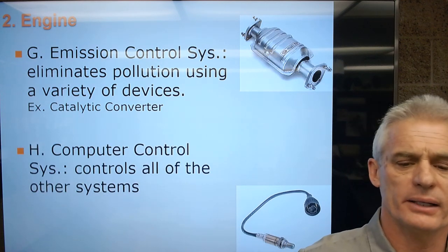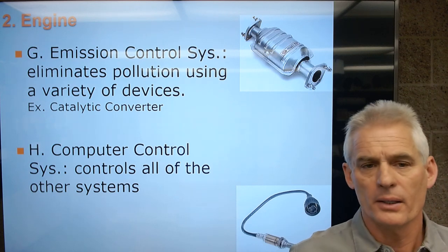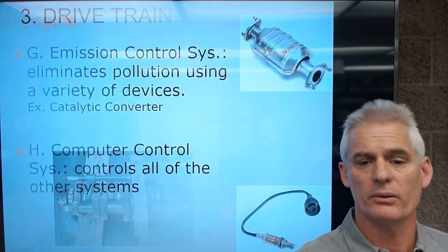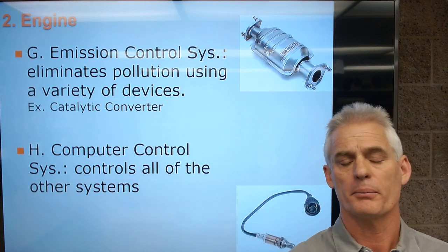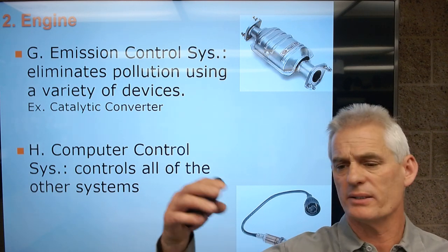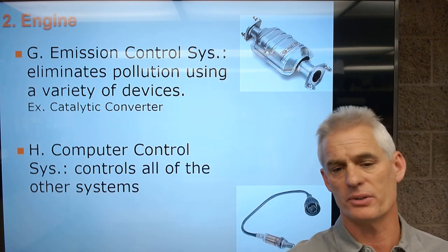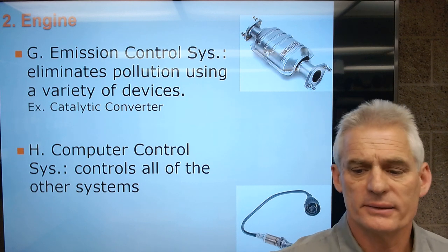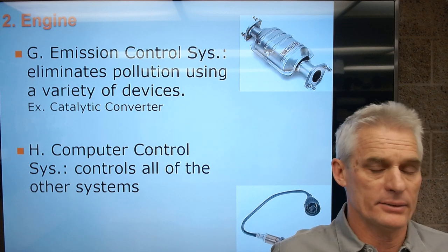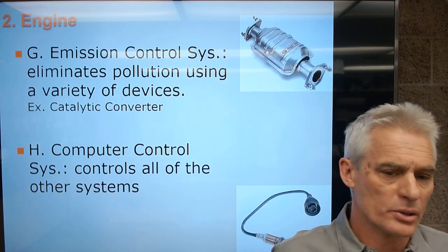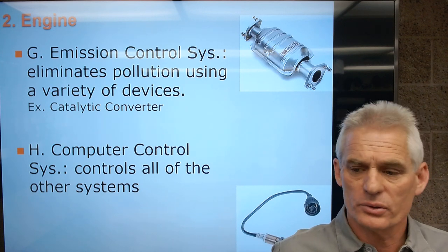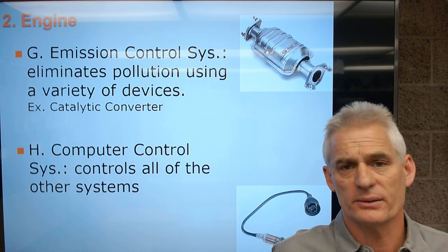The next subset of an engine is the computer control system, which consists of what we call a PCM — powertrain control module — which is an engine computer. There are also transmission computers, ABS computers, airbag computers, and more. All these computers work together with different sensors to give commands to fuel injectors, emission control devices, spark timing, and so on. Computer controls manage many, many subsets of an engine.